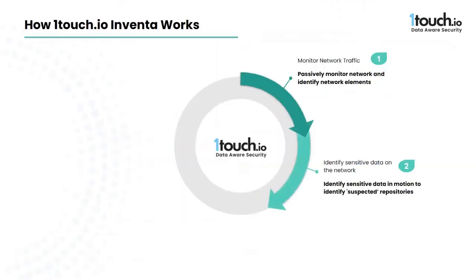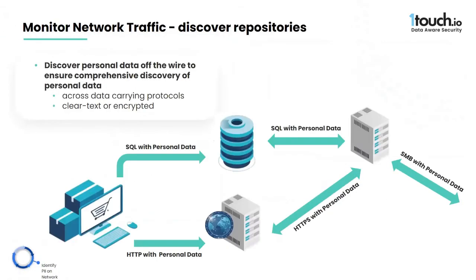We also use a copy of the network traffic to discover, identify, and categorize sensitive personal data traversing the network. This data can take many forms — maybe in an application or database transaction, a web query, or simply a file transfer. When Inventa identifies content of interest, we collect all the relevant packets and reconstruct them to interrogate the message in the same way we discover and catalog data at rest. This allows Inventa to identify how specific data is shared between repositories, databases, and applications in the organization.